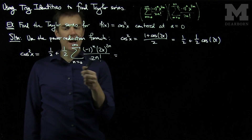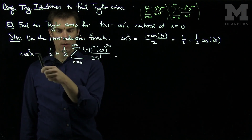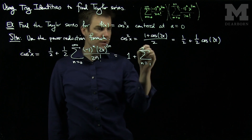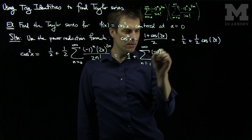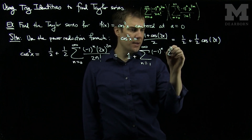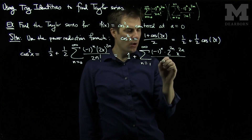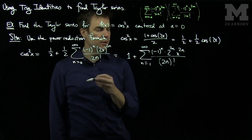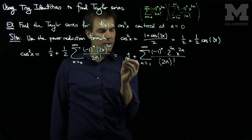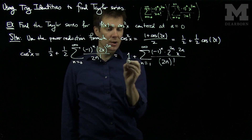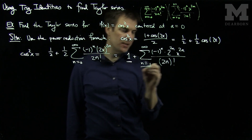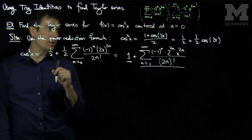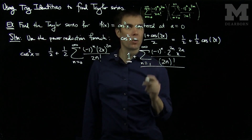Looking at the constant term: the constant term gives us 1/2 + 1/2 = 1, so we write 1 plus the sum from n=1 to infinity of (-1)^n 2^(2n) x^(2n) / (2n)!. The constant term corresponds to the constant in the Taylor expansion, and the sum covers terms of order x and above. The power reduction formula helped us find the Taylor series quickly without resorting to the Cauchy product.